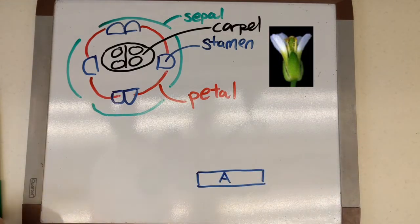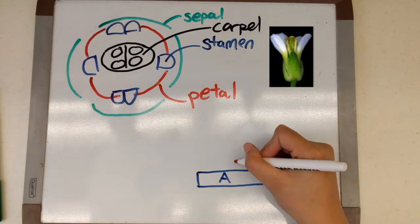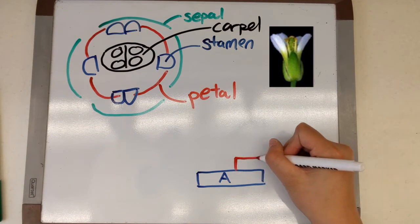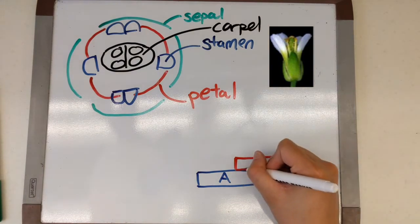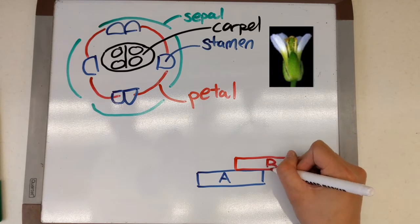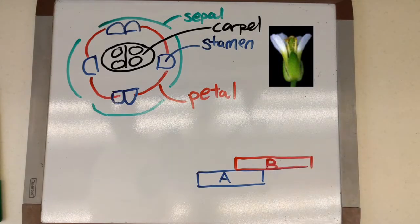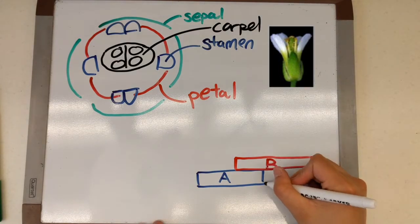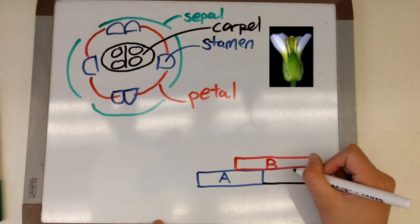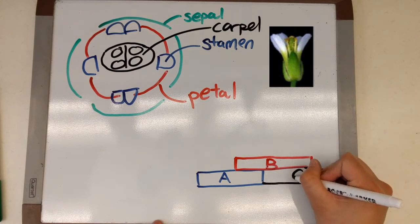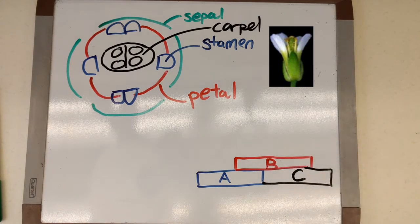Now these four structures are found in very specific positions called whorls. So whorls are basically these concentric circles and designate very specific areas of gene expression. Whorls 1 to 4 are from the outside sepals to the inside carpals.